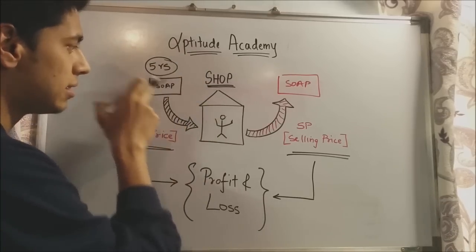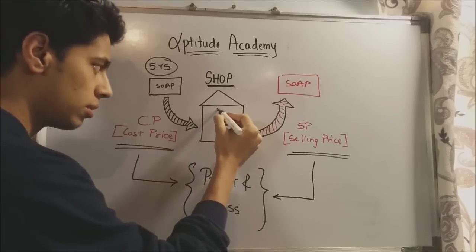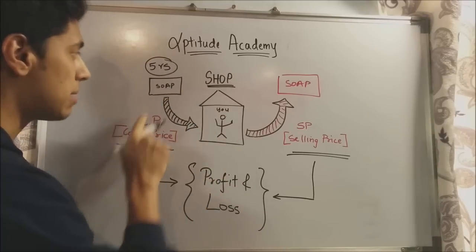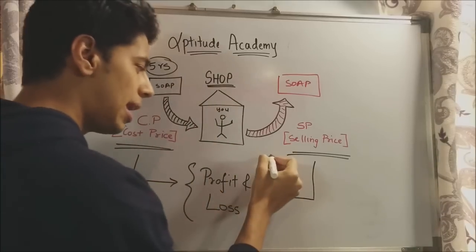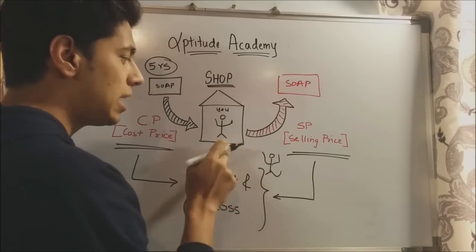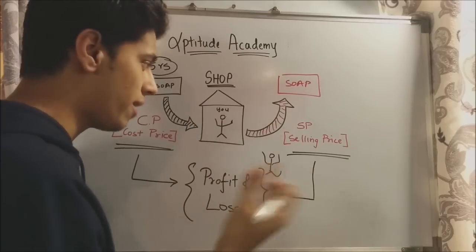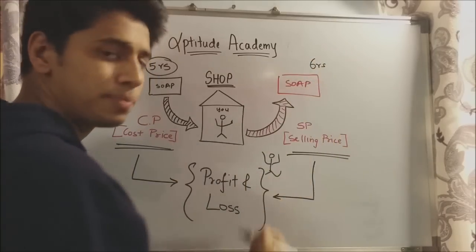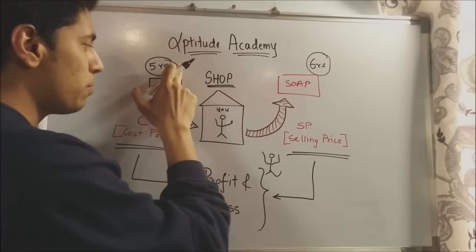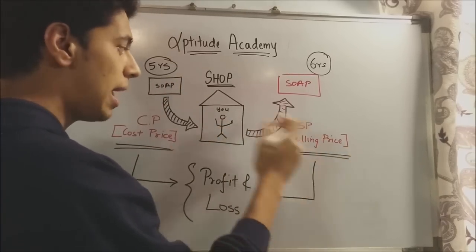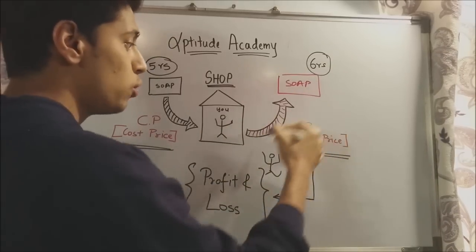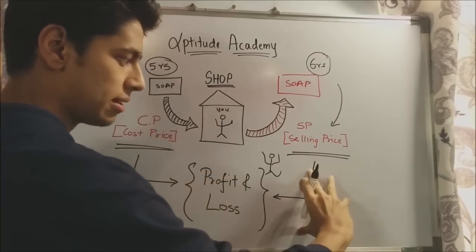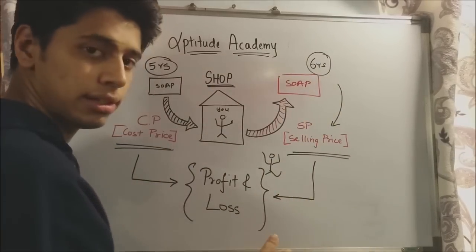This 5 rupees you have paid — it has cost you 5 rupees to get something, so this becomes your cost price. You've bought it and kept it in your shop. Now your friend comes along, he wants a bar of soap, and you sell it to him for 6 rupees. You invested 5 rupees and now you have 6 rupees, so your selling price is 6 rupees. You had 5 rupees, now you have 6 rupees — you have 1 rupee extra. That is your profit.